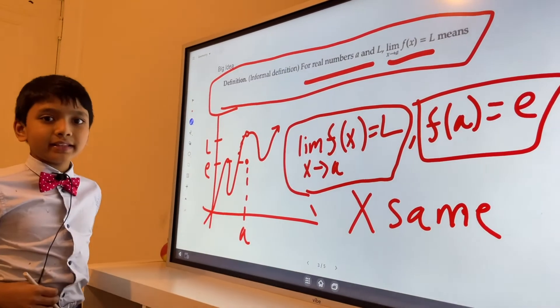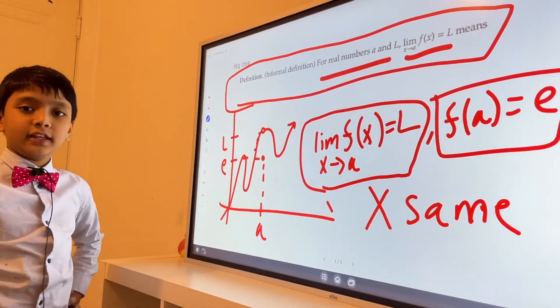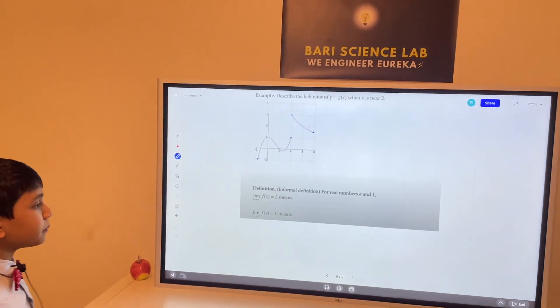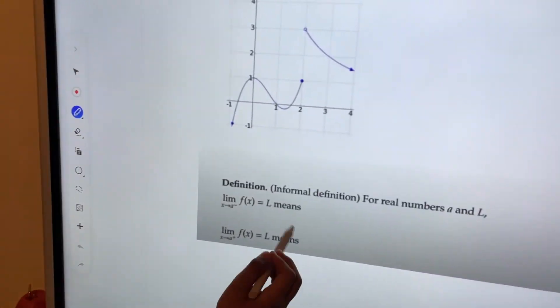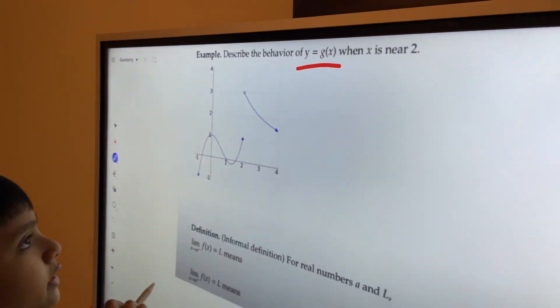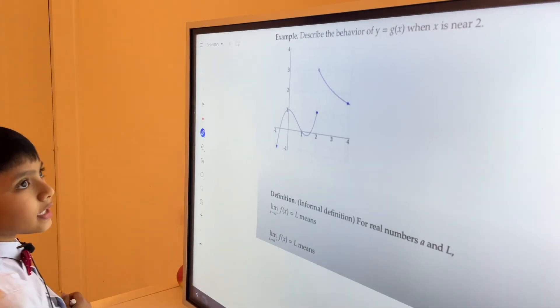Thank you everybody, and that's the first part of our big idea. So here is the question in the example of our big idea. We want to describe the behavior of y equals z of x when x is near 2.